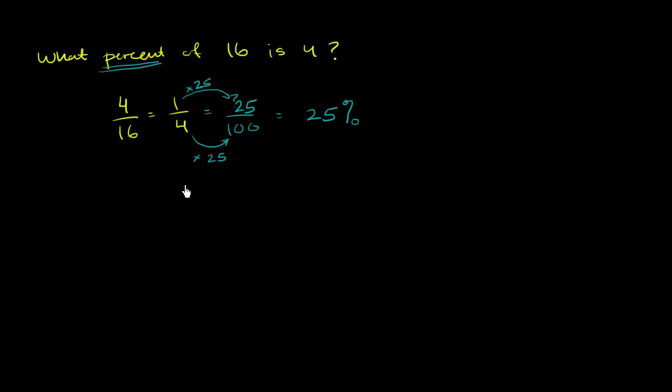Now there's a couple of other ways you could have thought about it. You could have said, well, 4 over 16, this is literally 4 divided by 16. Well, let me just do the division and convert to a decimal, which is very easy to convert to a percentage. So let's try to actually do this division right over here. So we're going to literally divide 4 by 16.